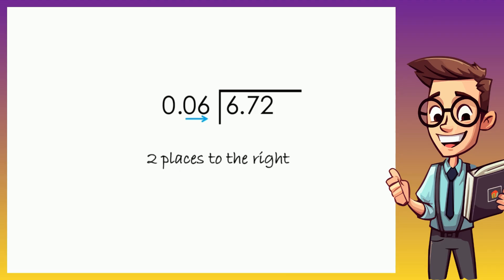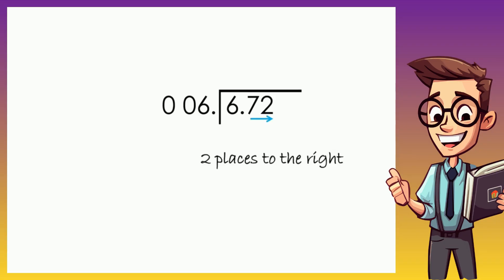In this case we need to move the decimal point twice to the right. As a consequence, we also need to move the decimal point of our dividend twice to the right. Then we raise the decimal point if necessary — in this case it's not. Now the divisor is already a whole number and it's 6.